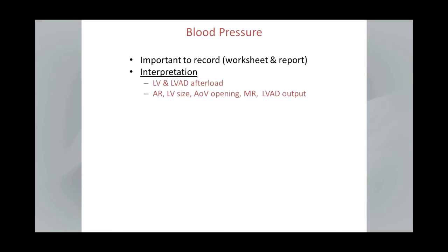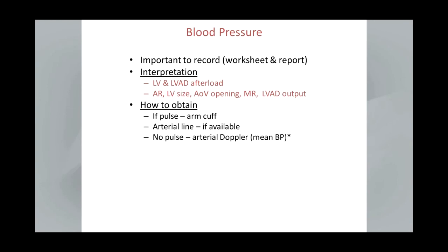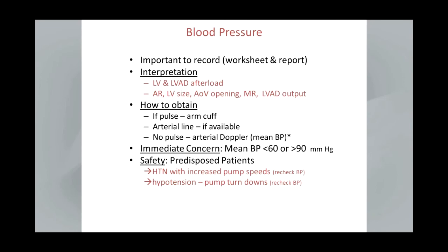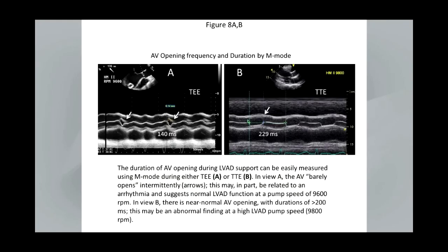Another issue is blood pressure — it's important to record this on the worksheet. Blood pressure reflects LVAD and native LV afterload and can strongly influence the amount and interpretation of different things, such as AR, LV size, aortic valve opening, mitral regurgitation, and the amount of flow through the aortic valve. It can be tricky to obtain a blood pressure in patients that have continuous flow and no pulse. We can use an arterial Doppler exam, which would correspond to a mean pressure, and your support teams often provide these. If the patient has aortic valve opening and a pulse, then you can get a standard blood pressure reading.